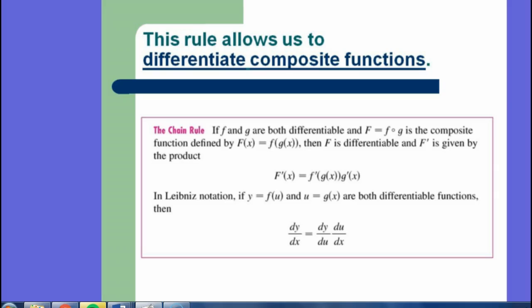So we have the statement that f and g are both differentiable, and F, which is a capital letter now, equals f of g is the composite function defined by capital F. Then F is said to be differentiable, and F prime is given by the following product, where it's the derivative of the outside times the derivative of the inside.